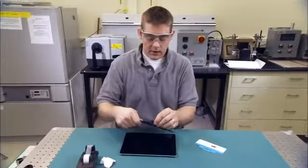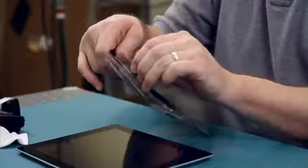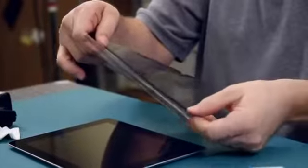One of the tricks for laminating to help get rid of dust is not to pull that liner back all the way. I can peel back the liner maybe about an inch or two.